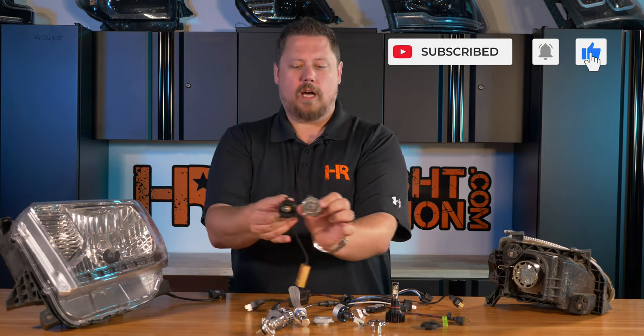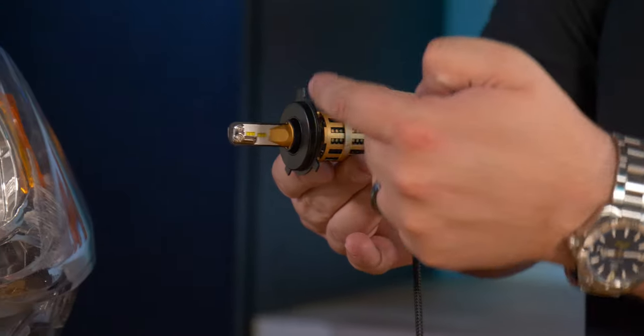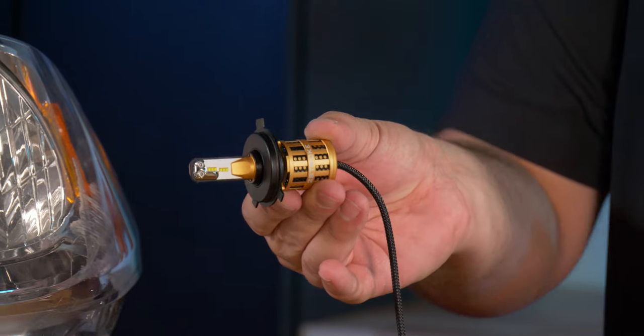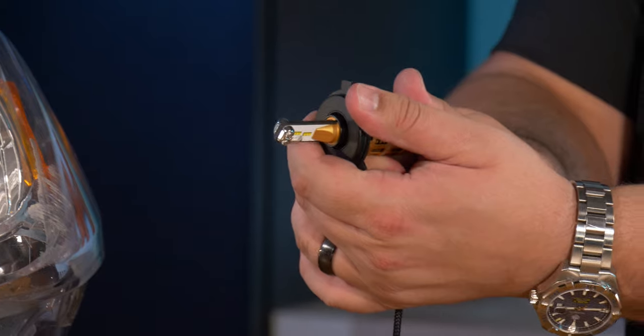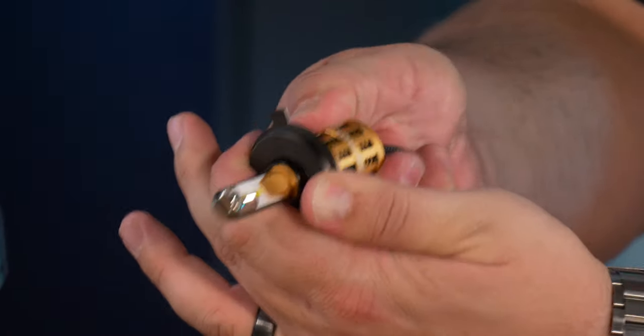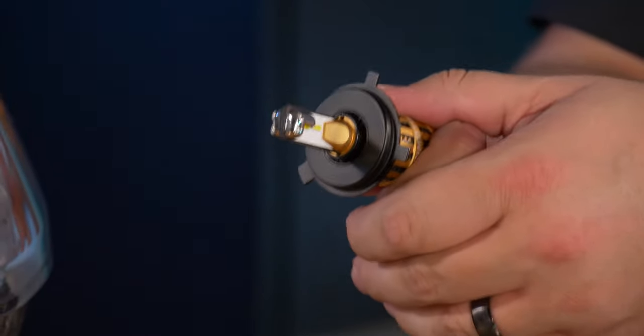Your center tab is facing up, your shield is facing up, and the LEDs are pointing horizontal left and right. If you have the bulbs crooked you're going to get a weird beam pattern. If you have it mounted upside down you're going to get a really bad beam pattern.